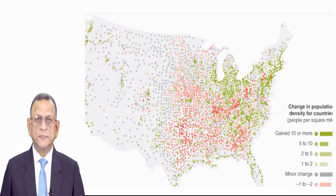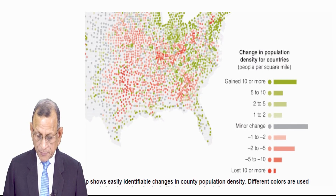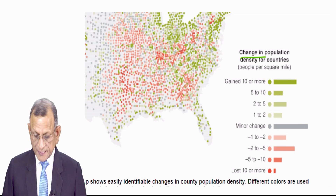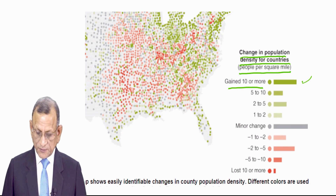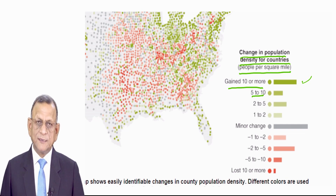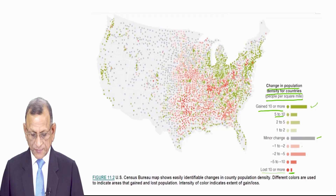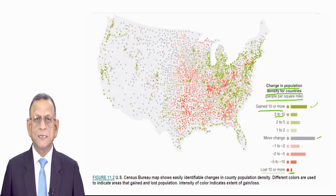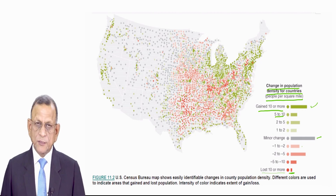We are in a position to see on this map, which has dots of different colors. What every dot indicates is changes in population density of a country — people per square mile. Gain of 10 or more is dark green; 5 to 10 is a little less green; 2 to 5 is still lesser; 1 to 2 is very light green. Minor changes are shown in gray. Minus 1 to minus 2 is slightly orange, leading to lost 10 or more shown as dark orange. With this map, you can understand what has happened to population density — where it has increased and where it has decreased.